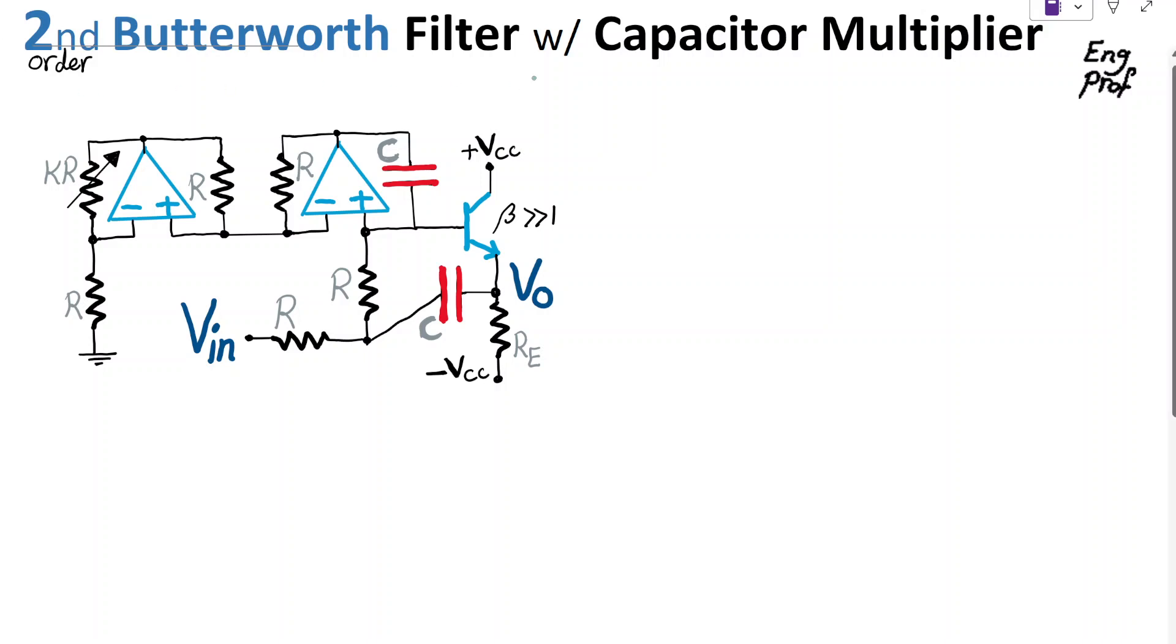A second-order Butterworth filter with capacitor multiplier is implemented in this circuit utilizing two ideal op-amps and one BJT, in which beta is much larger than one. This portion of the circuit acts effectively as a capacitor scalar or multiplier, taking the value of C and multiplying it by K of this potentiometer or variable resistor.